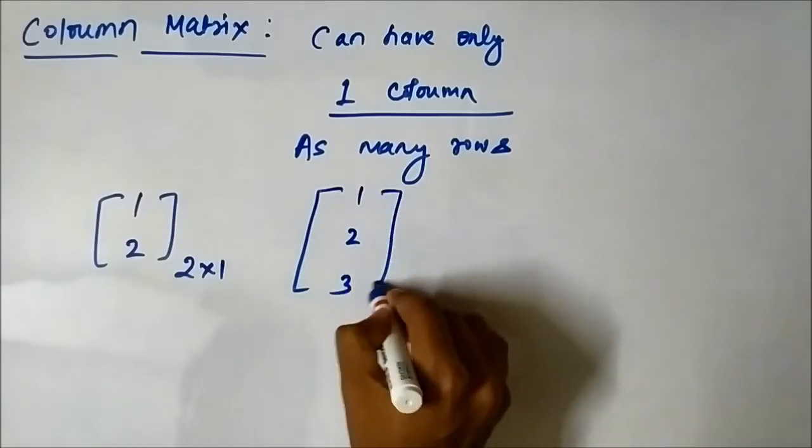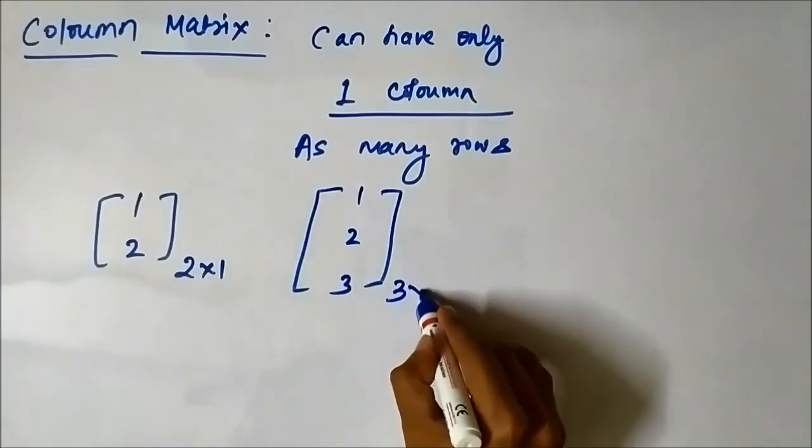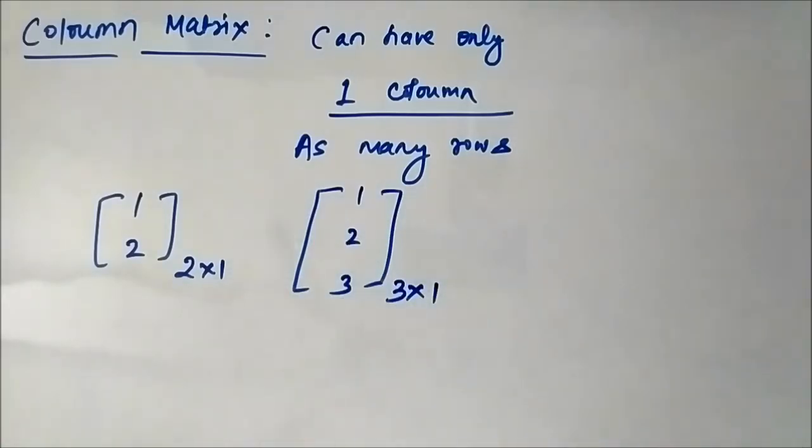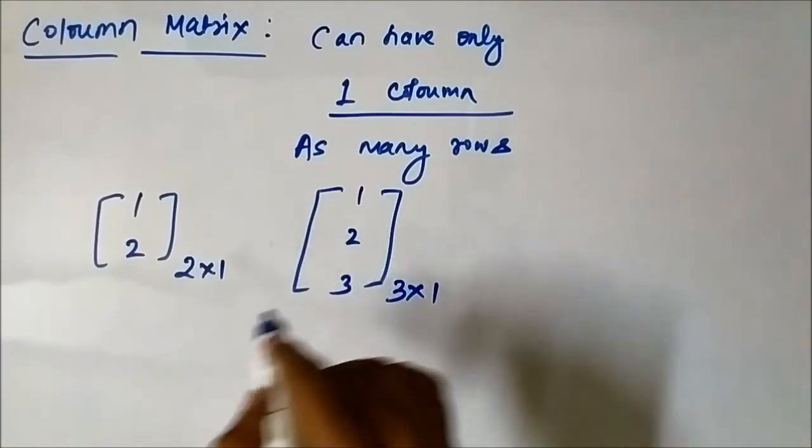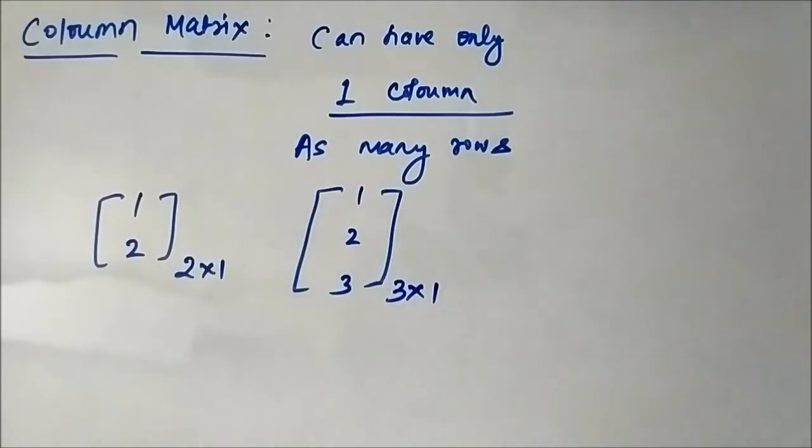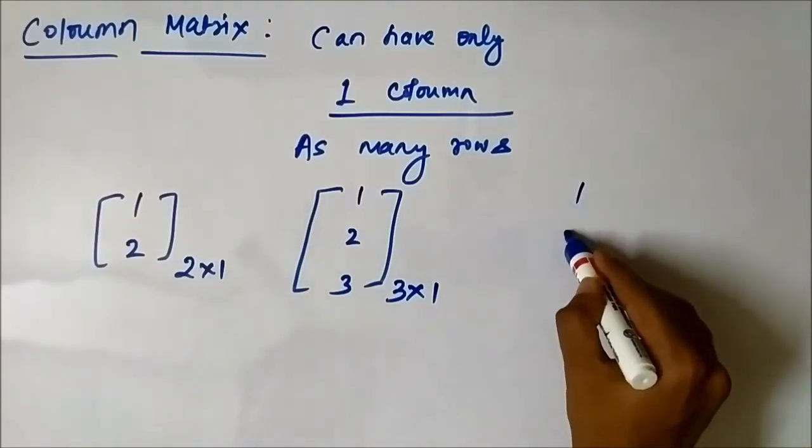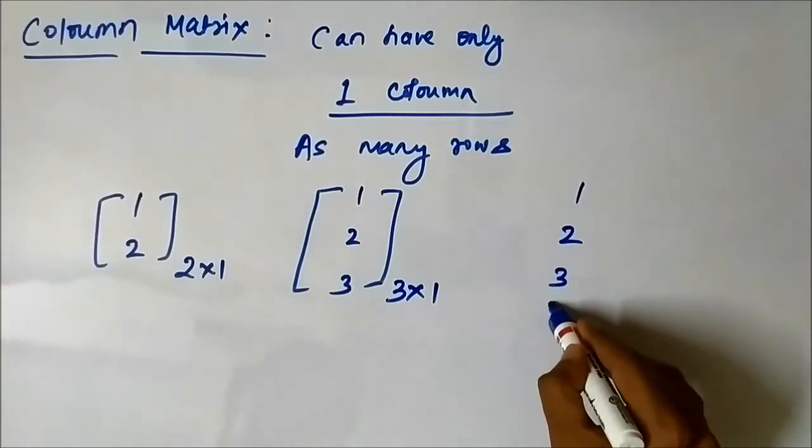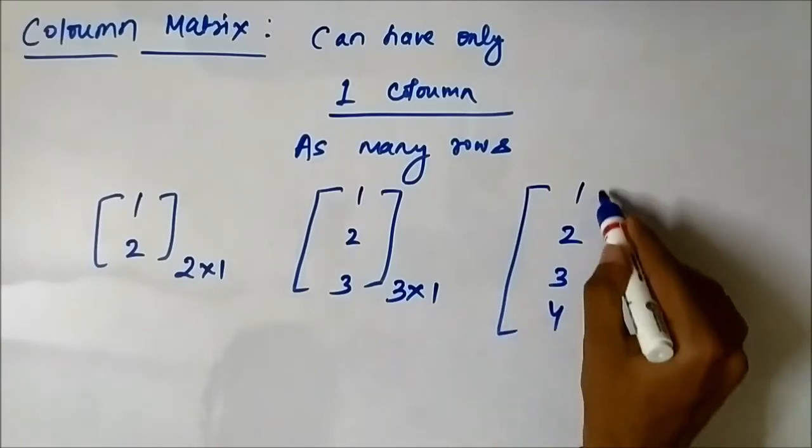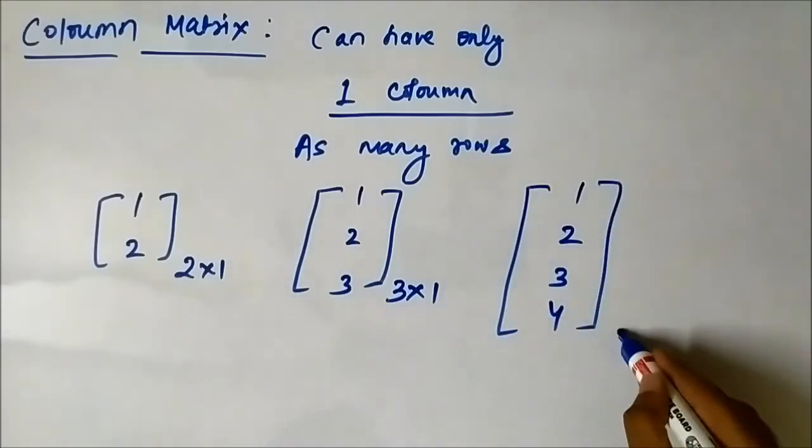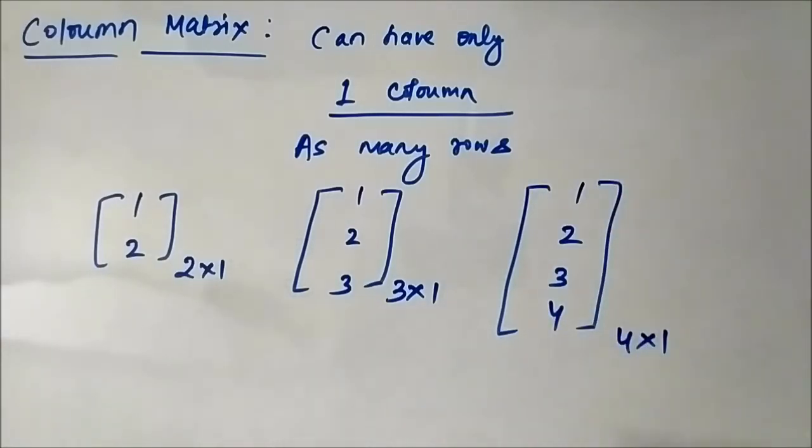It has 3 rows but only 1 column. Similarly, [1, 2, 3, 4]. It has 4 rows and only 1 column.